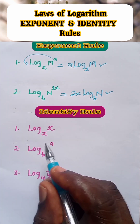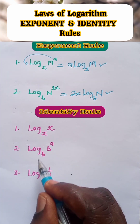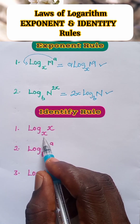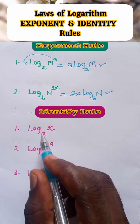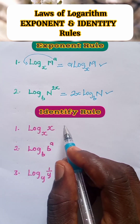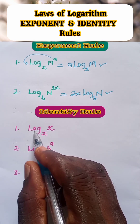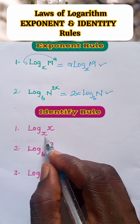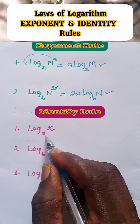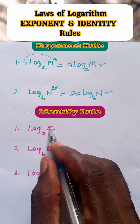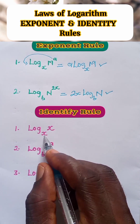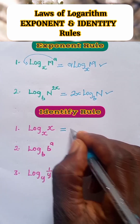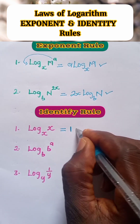Now let's look at the second set of questions. Log of x to base x. According to the identity rule, the logarithm of a number that is equal to its own base is equal to 1. That is, log of x to base x is equal to 1.